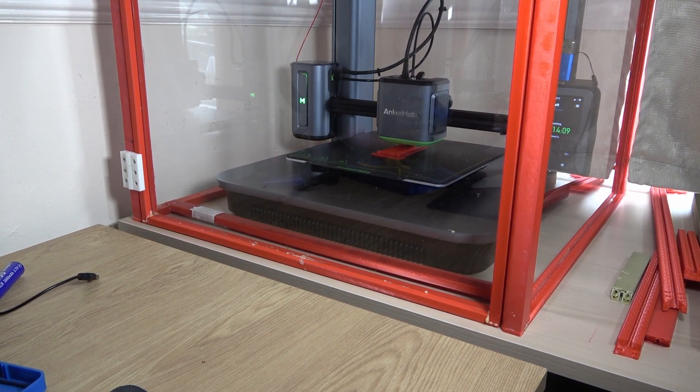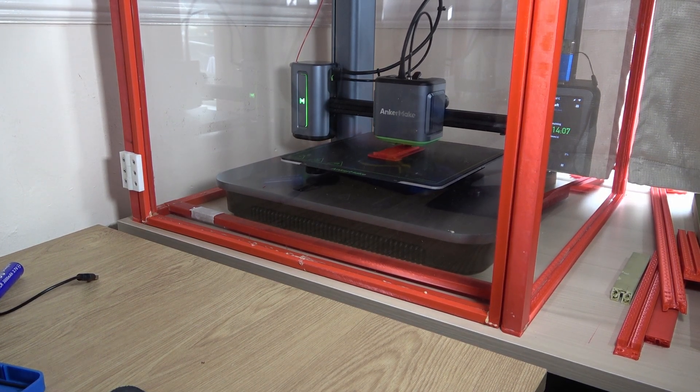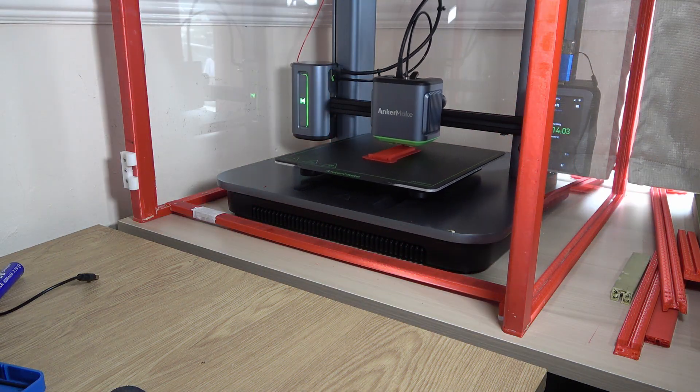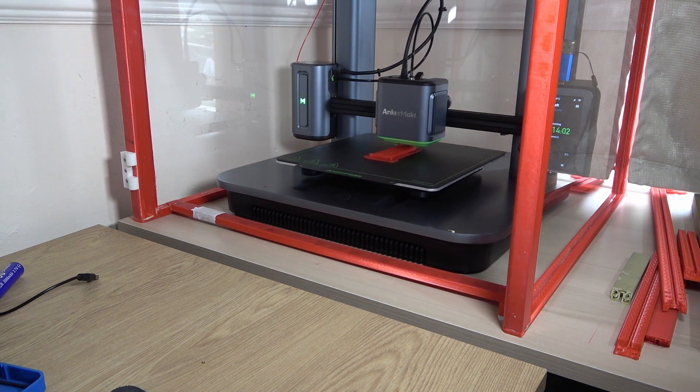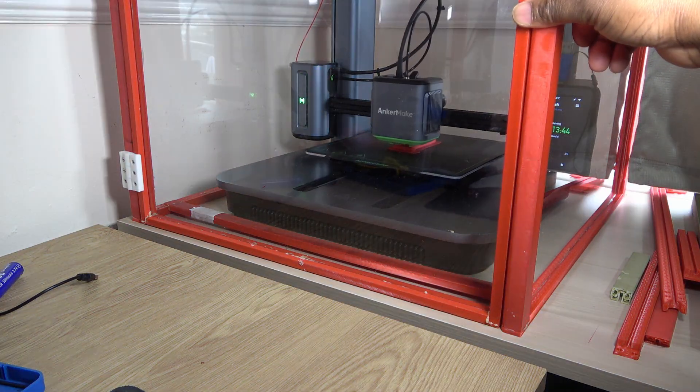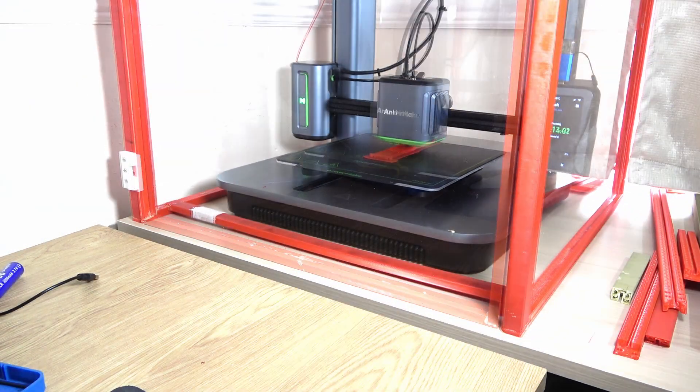I made an enclosure for my Anker Make M5 3D printer, changing the sound levels from something like this to something like this. Let's hear it again.